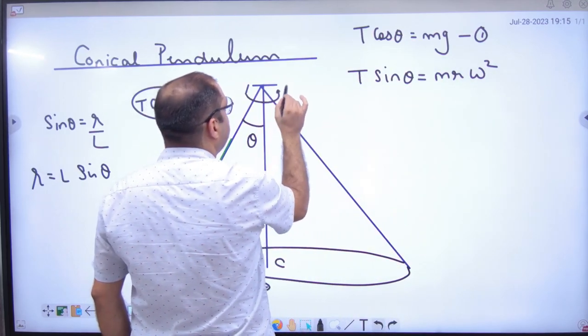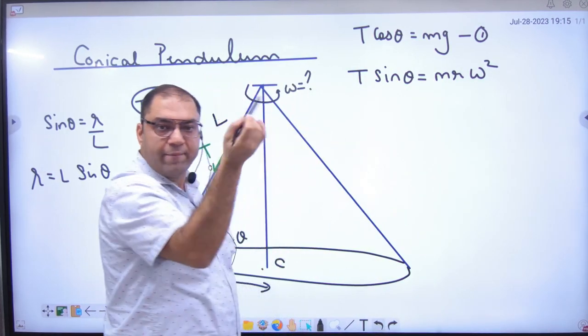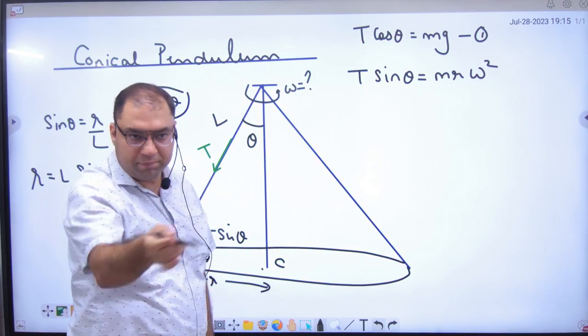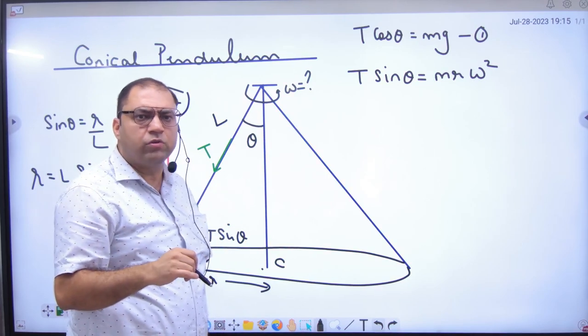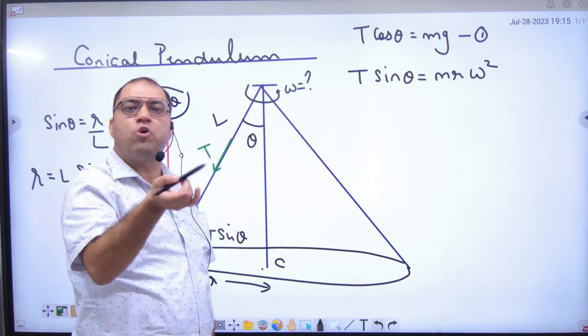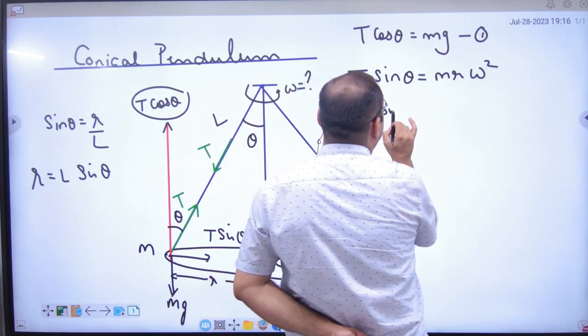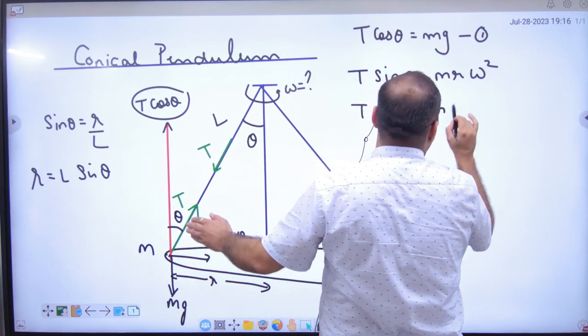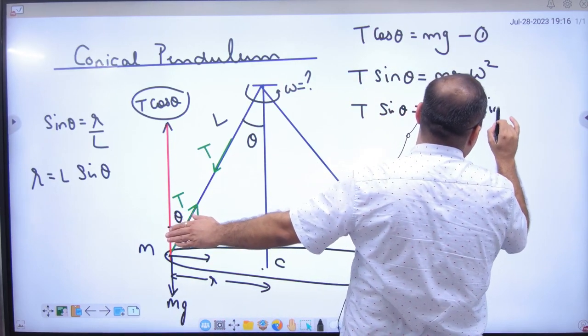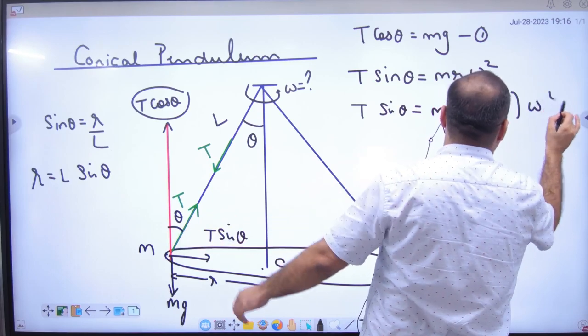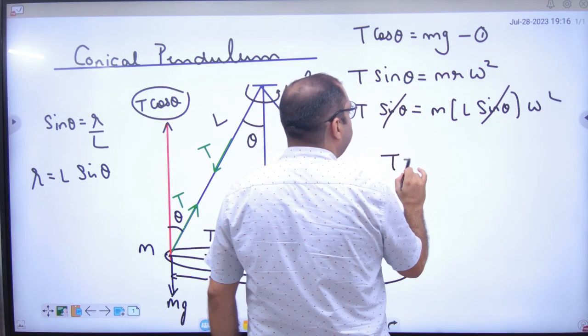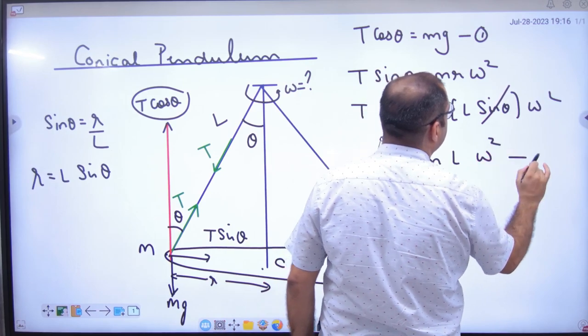How much omega is going to be? If it asks V, then M V square by R. Radius value we have taken as L sin theta into omega square. So T value is M L sin theta omega square.